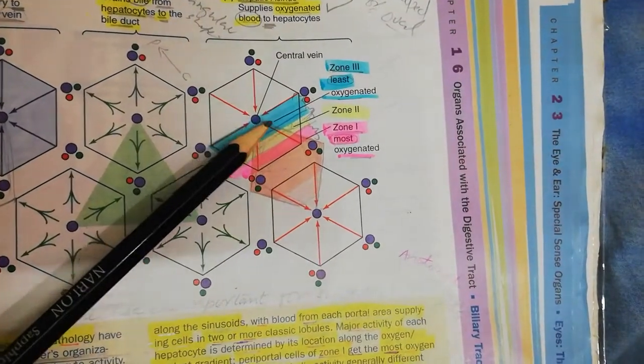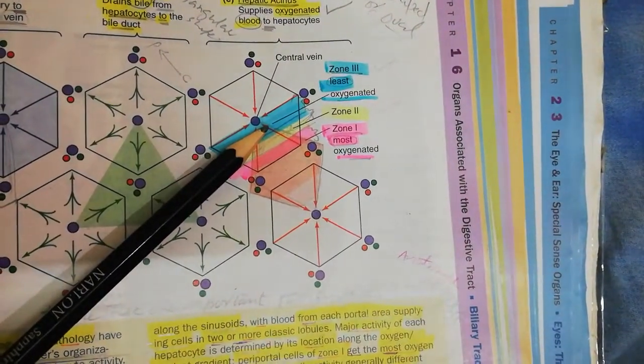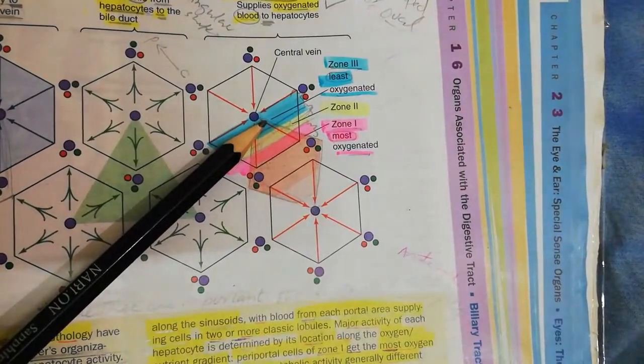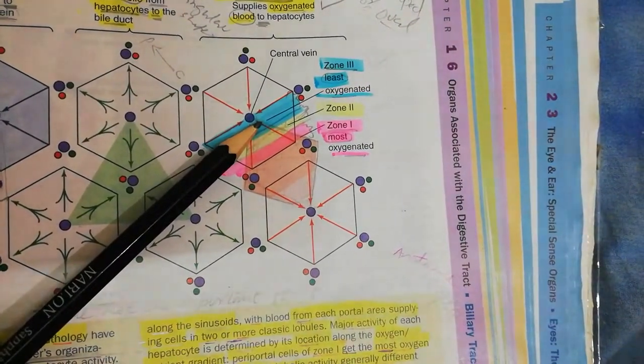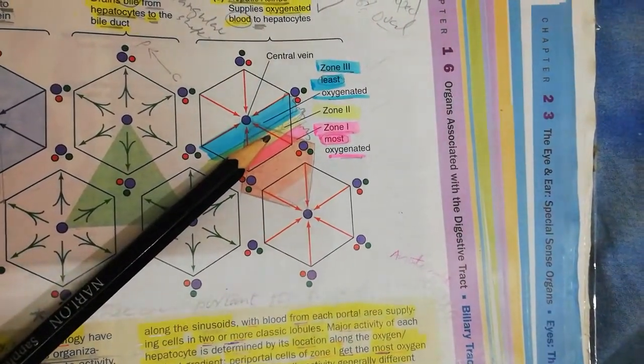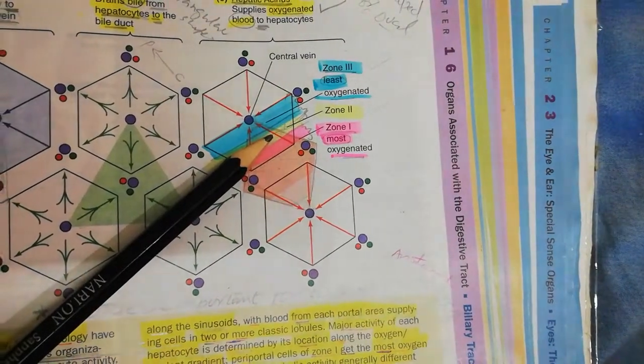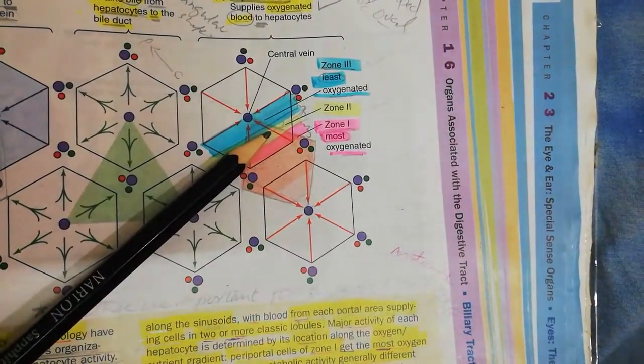The intervening zone, which is zone 2, has got an intermediate range of metabolic function.